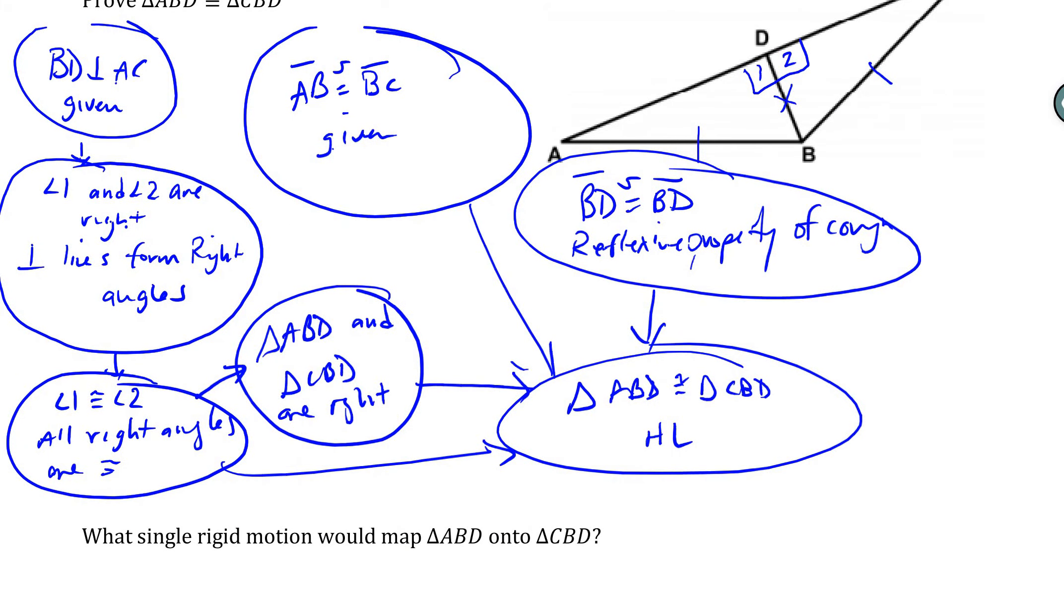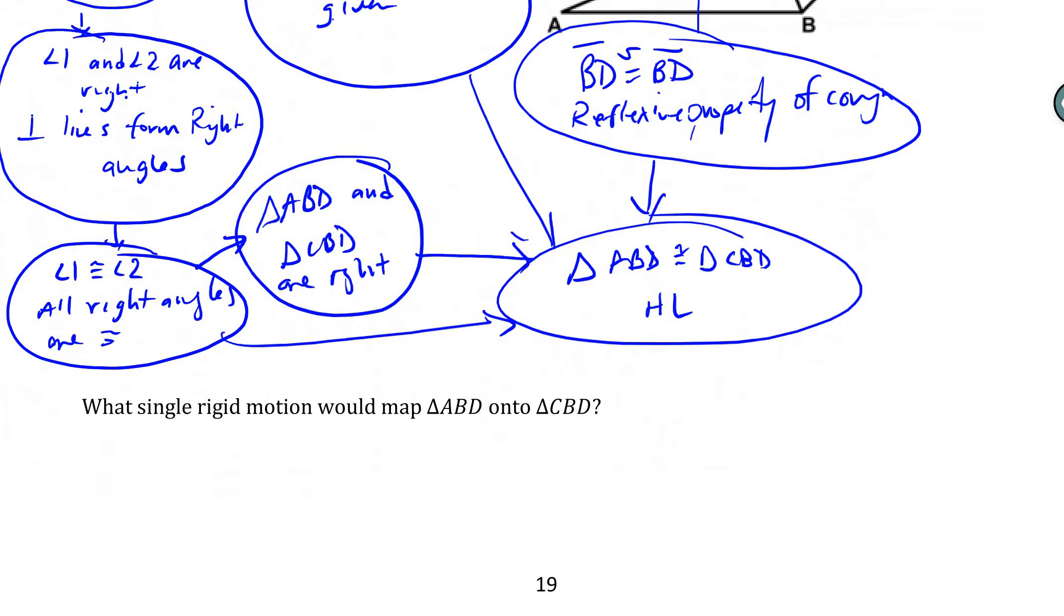What single rigid motion would map triangle ABD onto triangle CBD? That would be a reflection over the line segment BD. You can show it in symbols or you can actually write it in words.